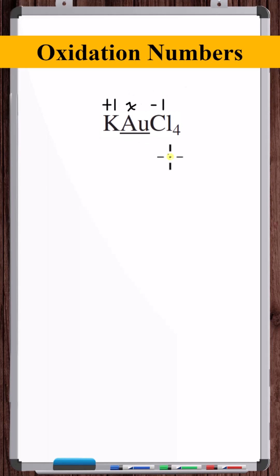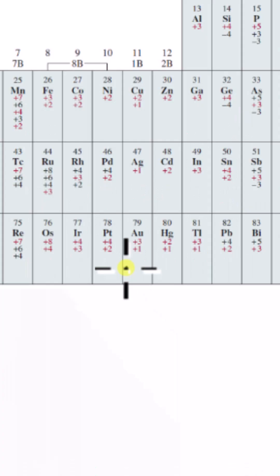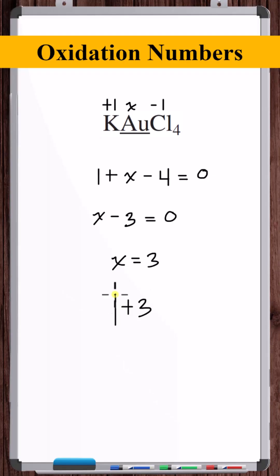The oxidation number of gold is unknown. The net charge on this molecule is zero. The total charge must add up to zero. There are four negative one charges. Checking the oxidation number chart, plus three is an oxidation number of gold. So the oxidation number is plus three.